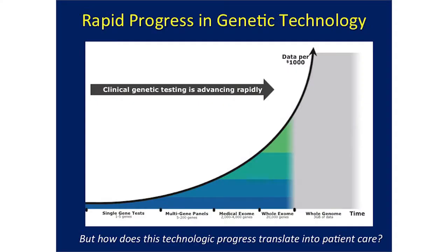This rapid progress is really related to advances in genetic technology. Clinical genetic testing is advancing very rapidly due to new next-generation sequencing techniques. This graph shows the exponential growth in data available per $1,000. Years ago, we really could only do a single gene test. We were paying costs in the range of $4,000 for two gene tests as recently as 2013. But now we're seeing a rapid rise toward whole genome sequencing everything for somewhere in the range of $1,000. For the first time, it's not the technology that limits us — the question is how this progress actually translates into our ability to take care of patients.